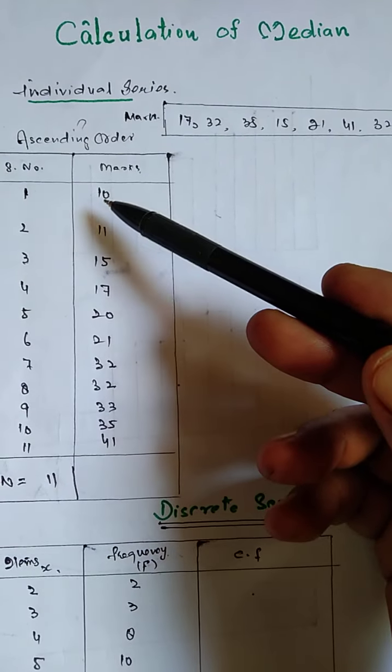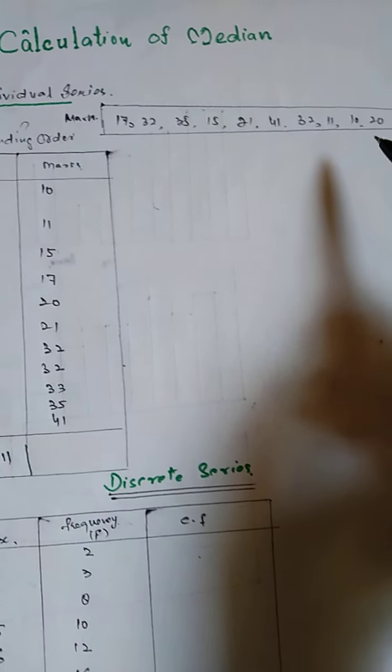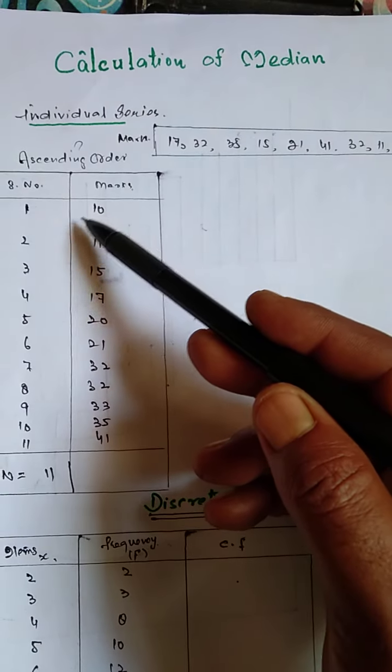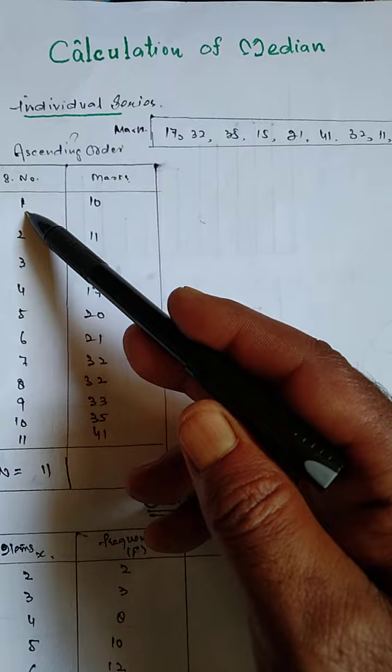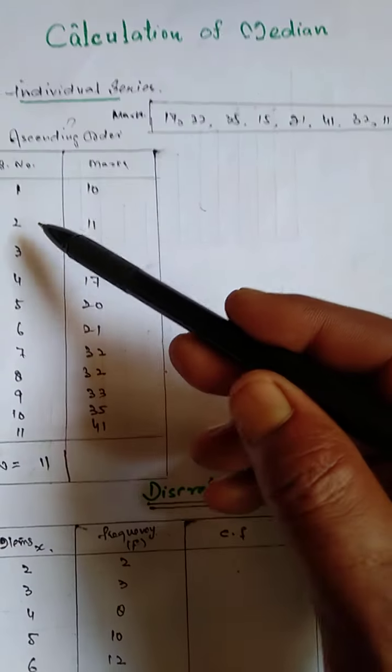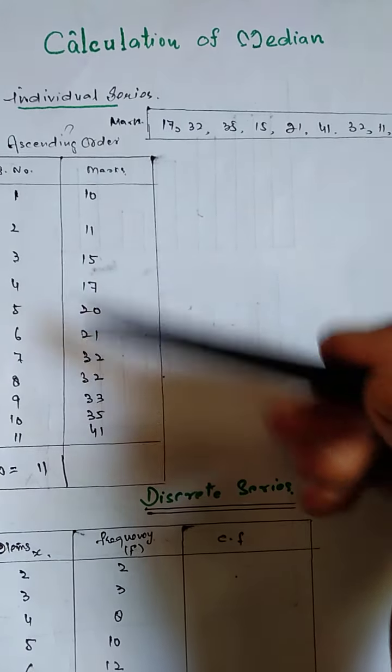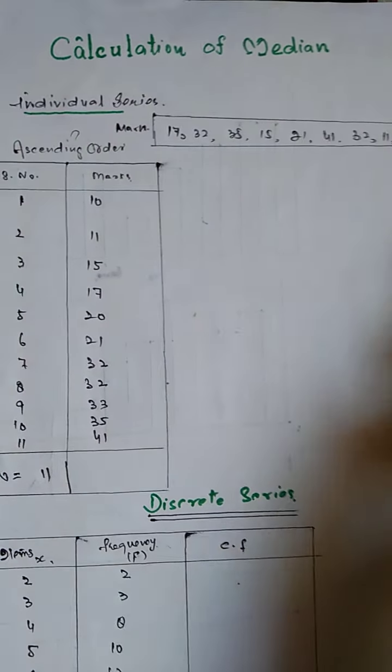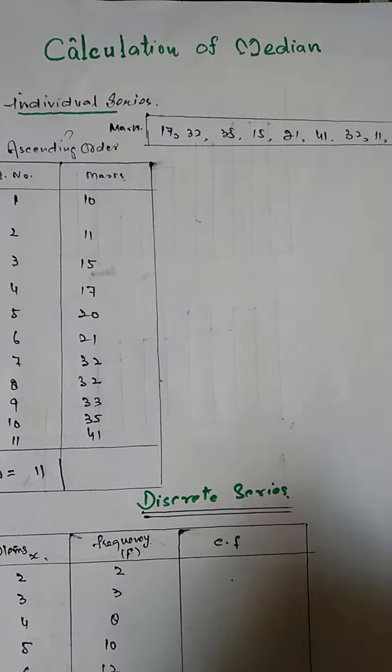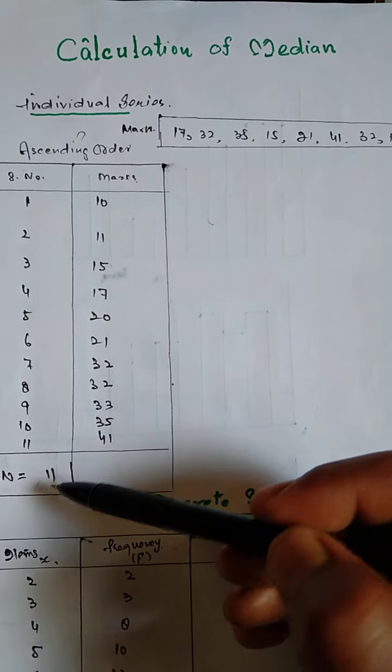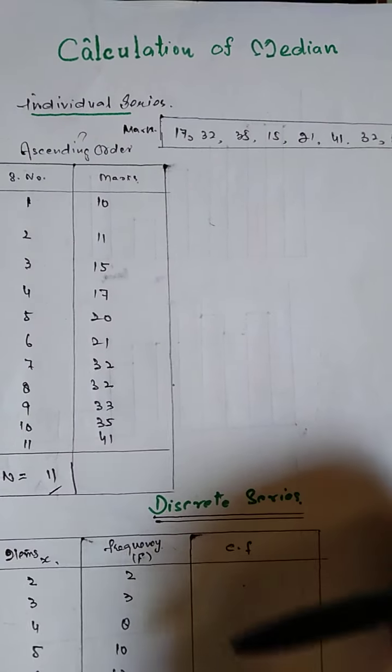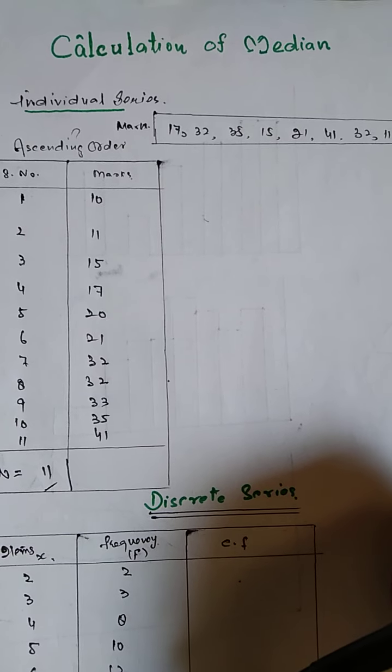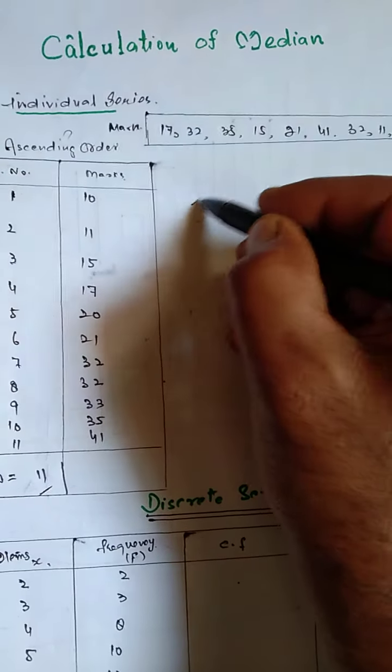As we have given here in ascending order, look at the series. The lowest item here is 10, so it ranks at number 1. 11 is at second. So in this way we go ahead, ascending, and take our serial number. Then what we have to do next, we have to find the n. Our items are 11 in number.